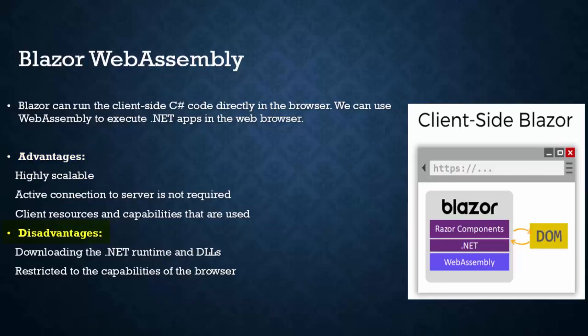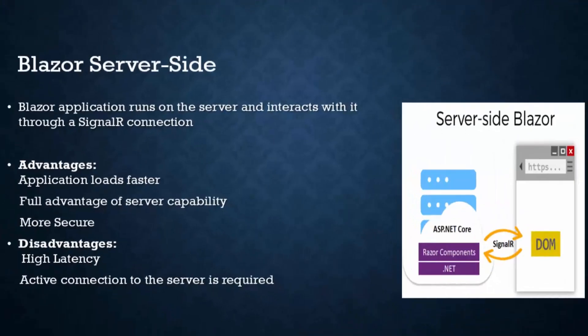Disadvantages of Blazor Web Assembly. First, downloading the .NET runtime and DLLs — it will need to download the entire .NET runtime and the libraries needed to run the .NET application in the browser, which could have an impact on the initial loading time of your application. Second, it is restricted to the capabilities of the browser.